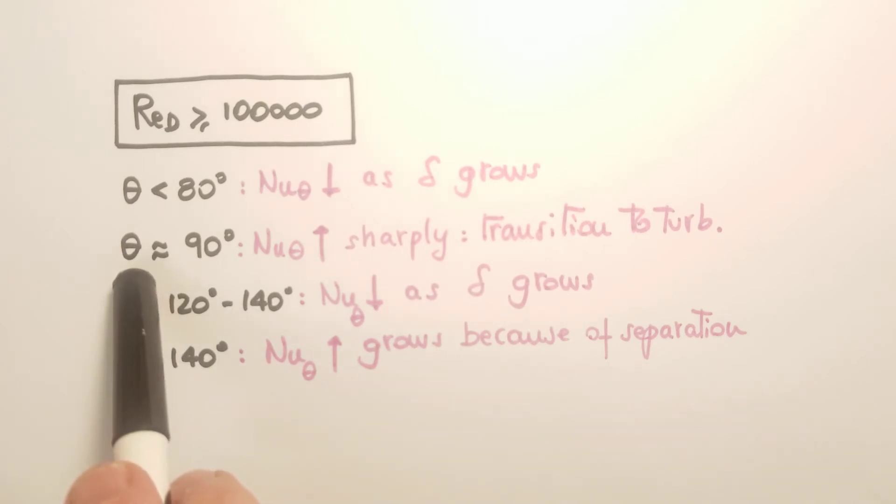But at theta about 90 degrees, we have a sharp increase of the Nusselt number as a function of theta. So at this angle, we have a transition to turbulence. So the mixing increases, and that's analogous to the case of the flat plate.